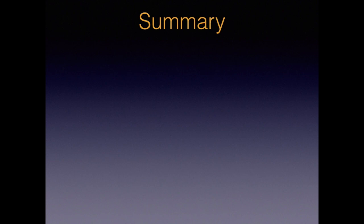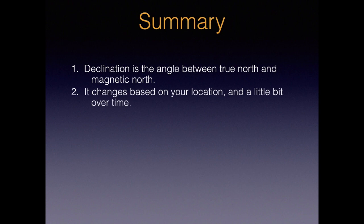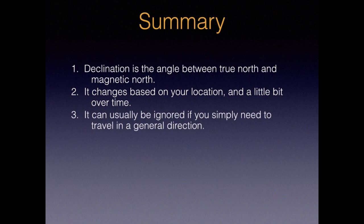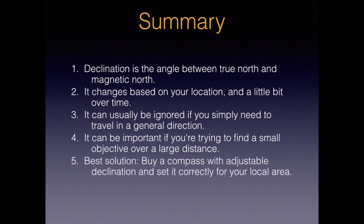We've covered a lot of ground here. Let's sum up what we've learned. One: declination is the angle between true north and magnetic north. Two: it changes based on your location and a little bit over time. You can usually ignore it if you simply need to walk in a general direction, but declination can be a lot more important if you're trying to find a small objective over a large distance. And finally, the best solution is to just buy a compass with adjustable declination, set it correctly for your local area, and measure all map bearings to true north. Thanks very much for watching, and if you found this video helpful, please give us a favorable comment and a high-five on YouTube.